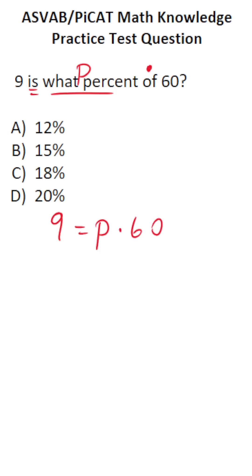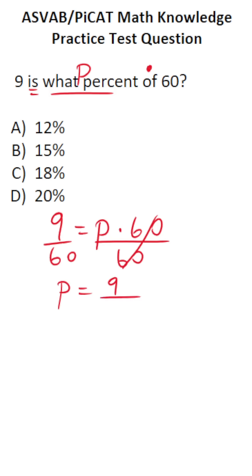We can solve for P by dividing both sides by 60. In doing so, the 60s cancel out, and we get P equals 9 divided by 60.